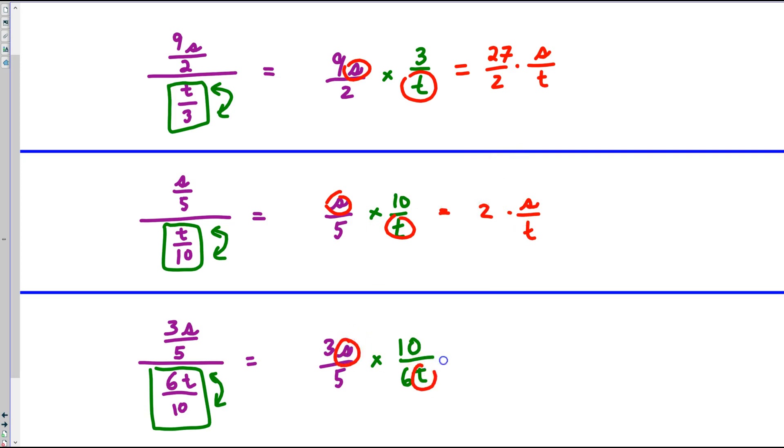Finally, we have s over t, and then combine the values. We've got 3 times 10, that's 30, divided by 5 times 6, that's 30, so this is just 1.